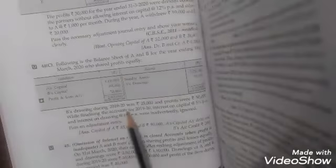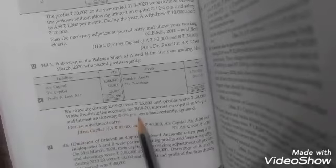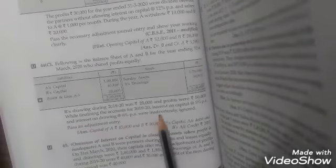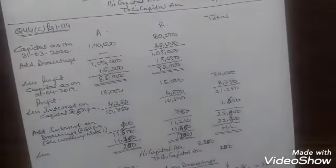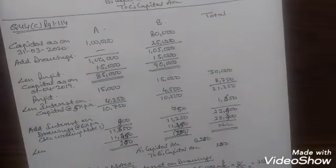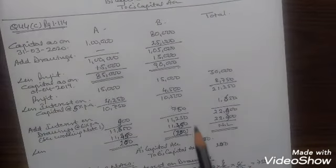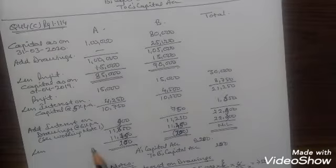While finalizing the accounts for 2019-20, interest on capital at the rate 5% per annum and interest on drawings at the rate 6% per annum were inadvertently ignored. Pass an adjustment entry. We will calculate the capital at the beginning for the purpose of providing interest on capital.